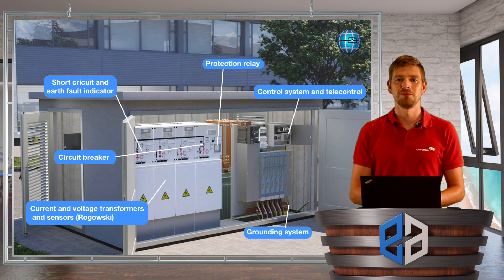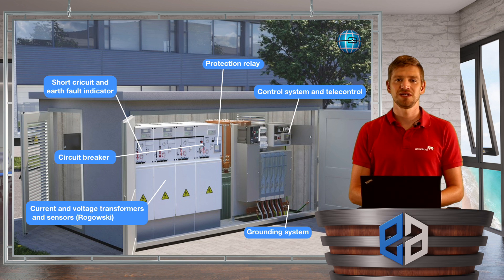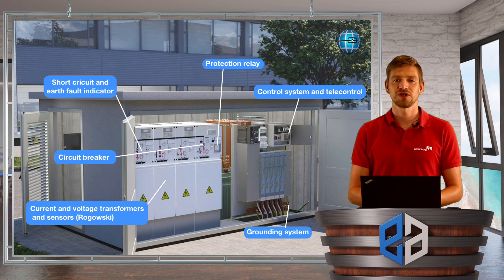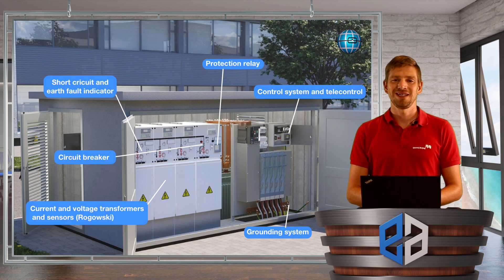Here is an overview of the modern components. A ring main unit consists of more than these components mentioned here, but we see these components coming in due to new requirements in the electrical power grid. On one hand we have the short circuit indicator and fault circuit indicator, which are becoming more common as more cables go underground and we need to detect faults in the power system. These short circuit and fault indicators also give you values of current, voltages, and even the power flowing through the secondary distribution grid, and they can even switch some load breakers.